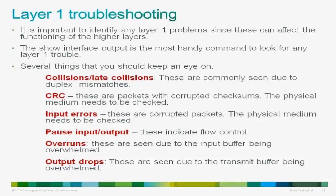Input errors are another good indication of layer 1 trouble — corrupted packets on ingress increment the input error counter. When you see input errors, CRCs, late collisions incrementing — for late collisions, check your duplex on both sides. For CRC and input errors, which are very layer 1 specific, TAC will always ask you to check your physical medium first, especially for 10G or GigE interfaces using transceivers and fiber optics. Change out your transceivers and GBICs on both ends, monitor for errors, then try changing the fiber optic cable, then change your physical ports.